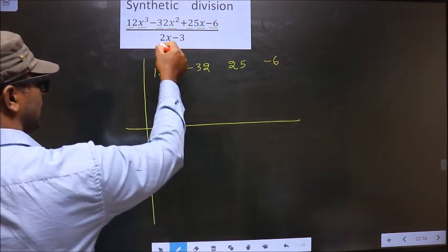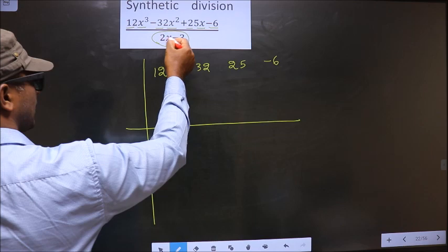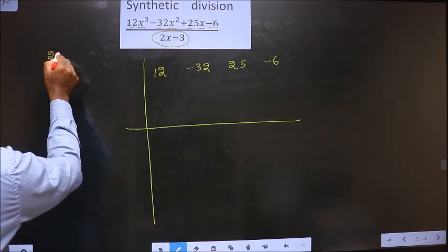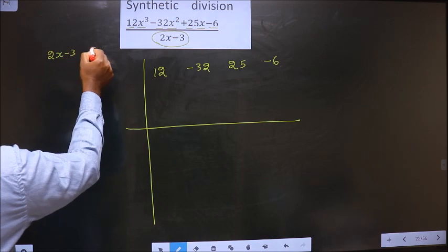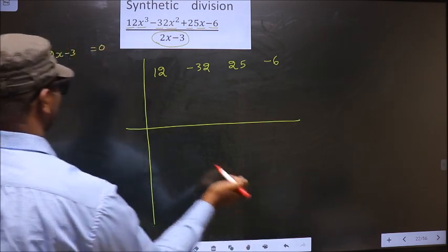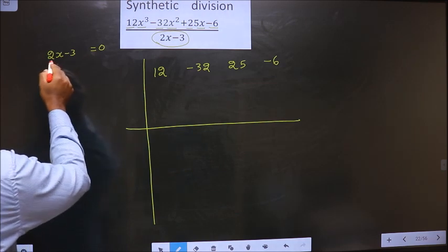Now we should equate the denominator to 0 and get x value from it. That is 2x minus 3 equal to 0. Now to get x value from here...